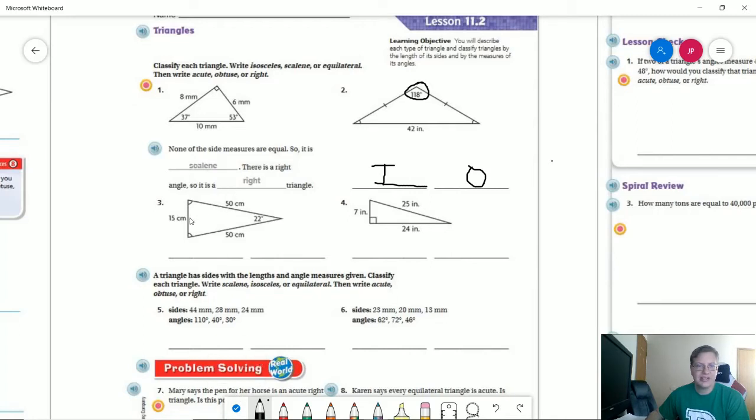So looking at our number three, we are going to have an isosceles triangle again because both of these sides are matching. And we are going to have an acute triangle. I was trying to think what the exact measurements were. So I could do 180 minus 22, and that would give me 168. So both of these should be, I believe it's 84 degrees.